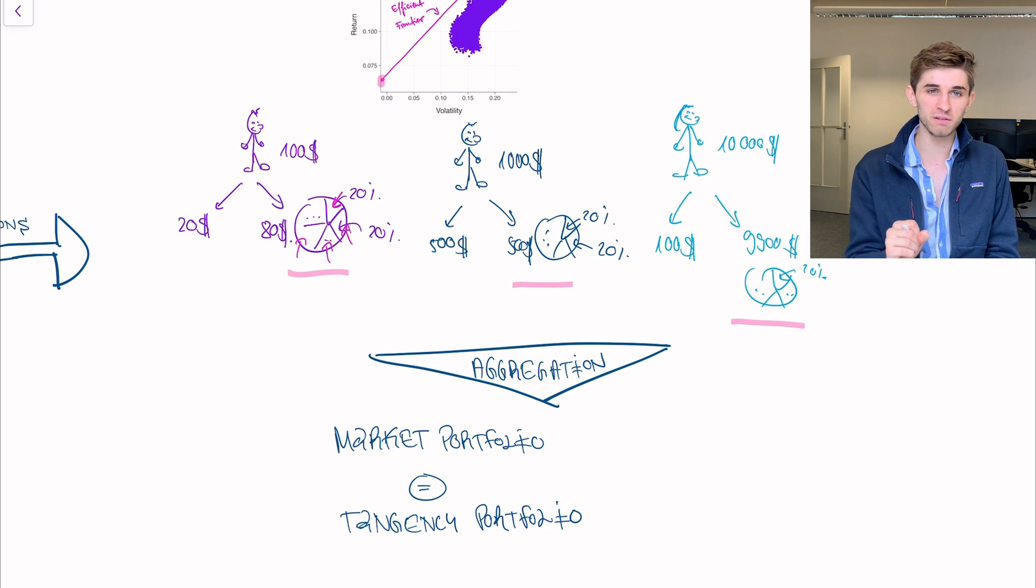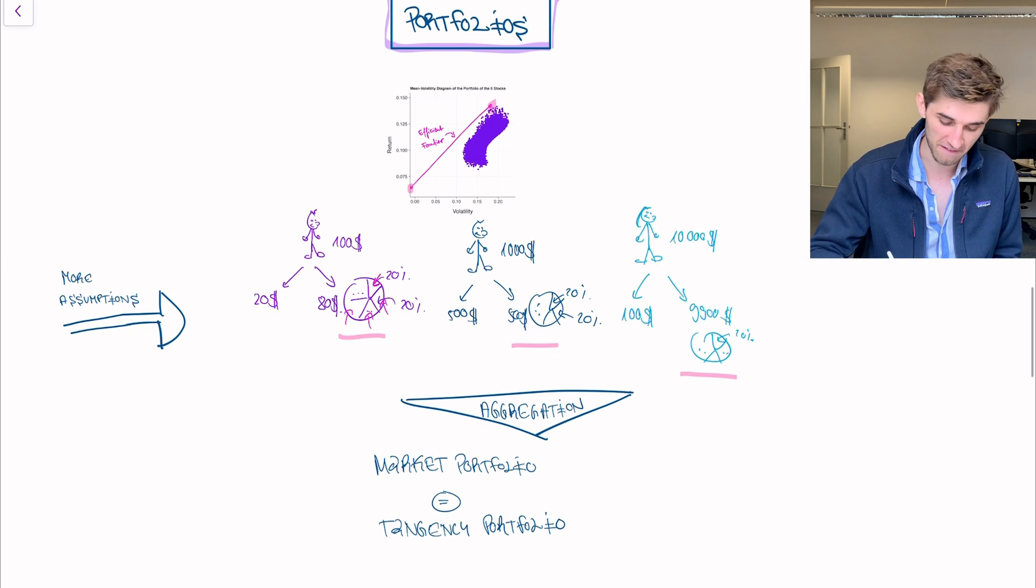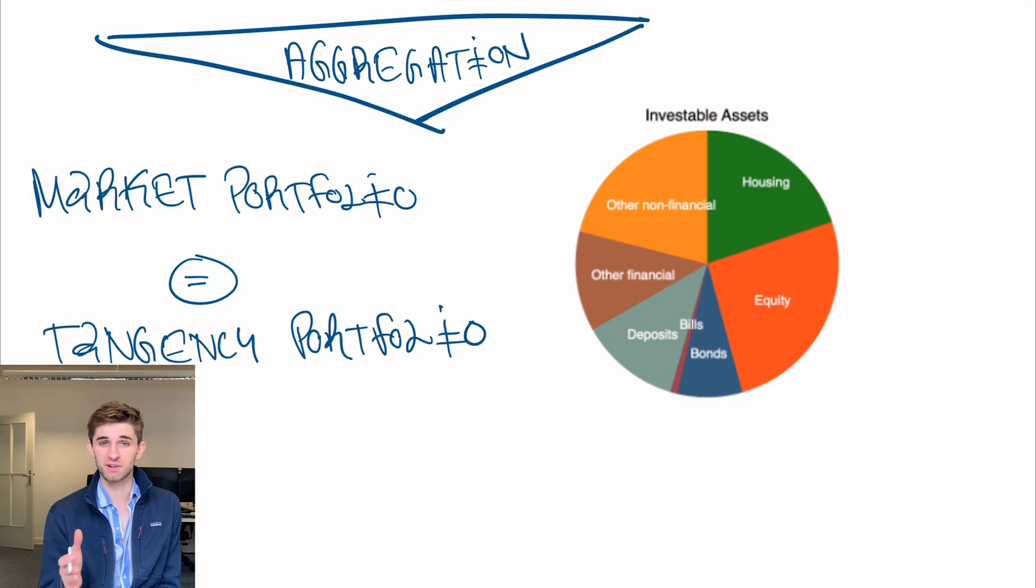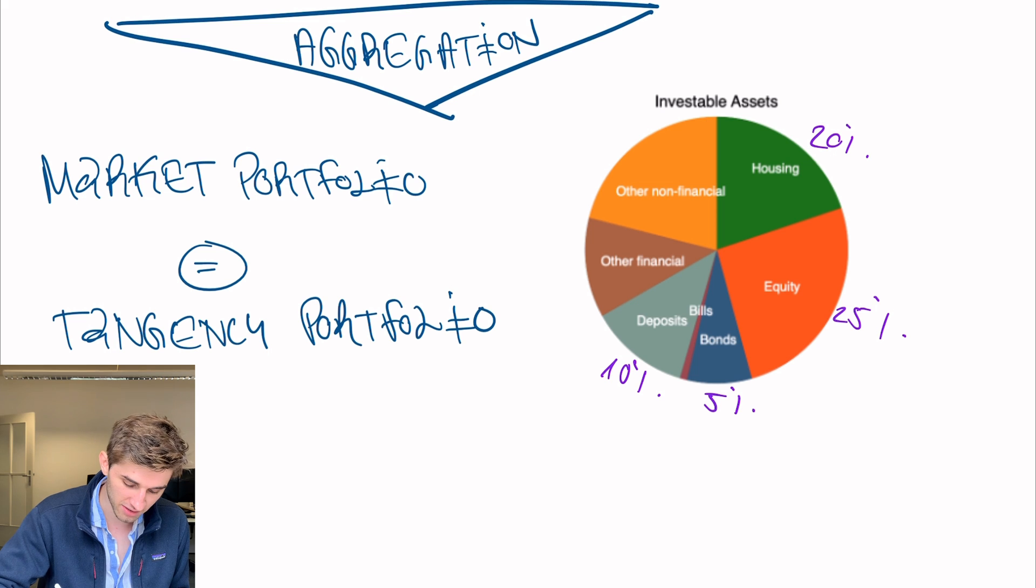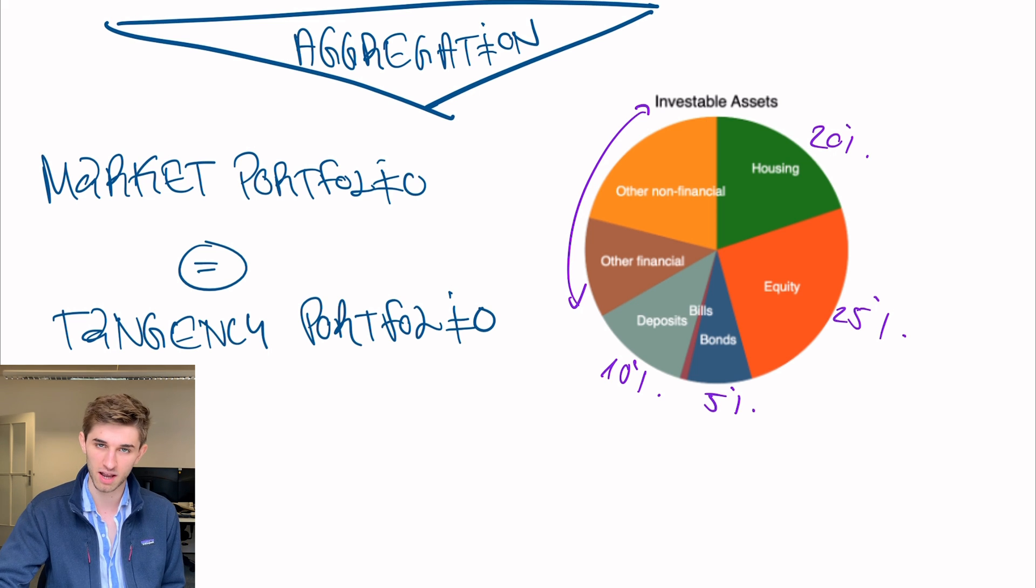So now let me show you the real market portfolio of today. This graph is from a paper that was actually written in part by some of my colleagues from the University of Bonn. And I'm going to link it in the description. And it tells you the distribution of assets in 2015. So what do we see? We have about 20% in housing. We have about 25% in equity, so that's stocks. Then we have about maybe 5% in bonds. And then we have another 10% in bank deposits. And the rest, that's in kind of more complex financial assets like derivatives, which I don't want to go into here.